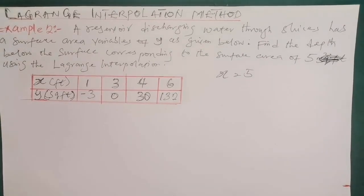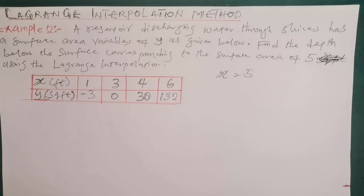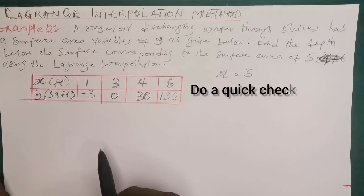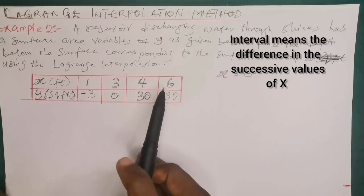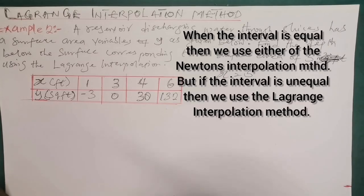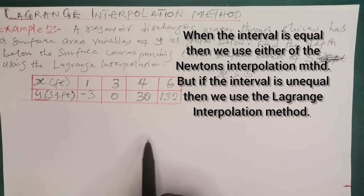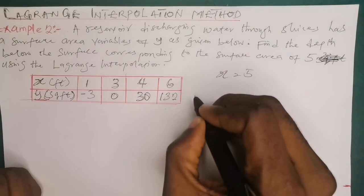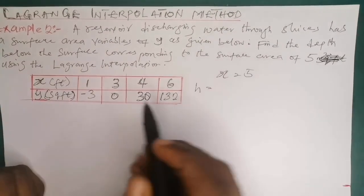If you are not told to use Lagrange interpolation, how do you know whether to use Lagrange or not? As mentioned in the previous video, you first check using the interval. The interval simply means the difference in successive values of x. If the interval is consistent or equal, we employ Newton's forward or backward interpolation. If the interval is not equal, we employ the Lagrange interpolation.